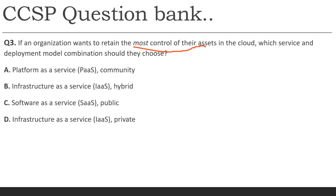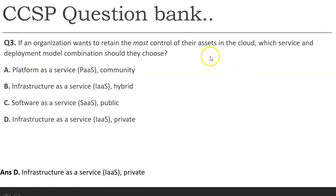Third question: If an organization wants to retain the most control of their assets in the cloud, which service and deployment model combination should they choose? Most control means most responsibility. In SaaS you have the least power, so eliminate it. Between IaaS and PaaS, IaaS gives more control. For deployment model, private cloud gives you maximum control — like hiring a private vehicle where you direct everything. The answer is infrastructure as a service with private cloud.